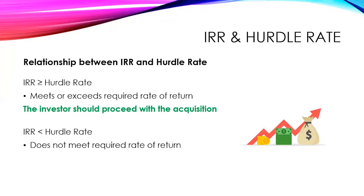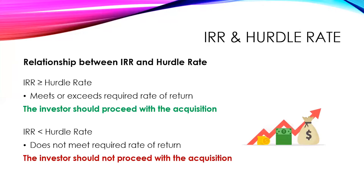If the internal rate of return is less than the hurdle rate, that means the investment does not meet their required rate of return. They're not going to make the earning that they want on this. So in this case, the investor should not proceed with the acquisition — they should not buy the property they're looking at, because it doesn't meet their criteria for how much income they want to make or the rate of return they're looking for from the investment.